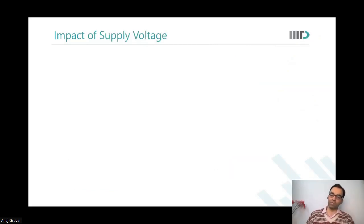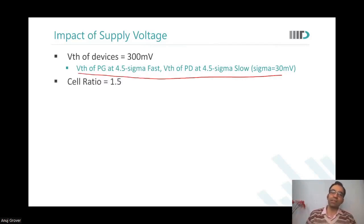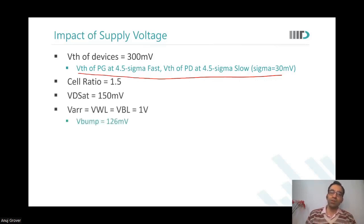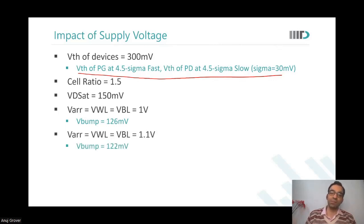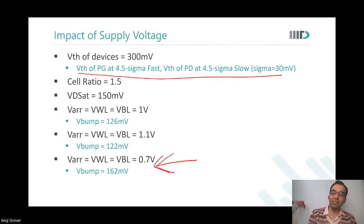Let us look at the impact of supply voltage. We apply the worst-case analysis setting with mismatch, cell ratio 1.5, VDsat fixed, and voltages at 1V. As we go to lower supply voltages, V bump increases and static noise margin degrades very significantly.